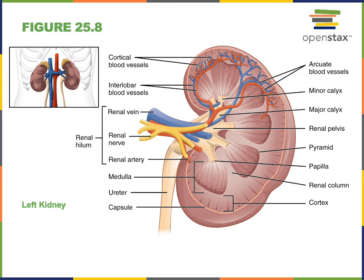Deep to the cortex is the medulla, which contains renal columns — extensions of connective tissue that separate the lobes of the kidney. Within each lobe is a renal pyramid. The renal pyramids contain the collecting ducts that complete the final process of urine formation and transport urine into the renal papilla. The pyramids also contain the nephron loops, or loops of Henle, which are involved in urine formation. The loops of Henle, tubules of nephrons, and renal corpuscles are all parts of a structural-functional unit known as a nephron.